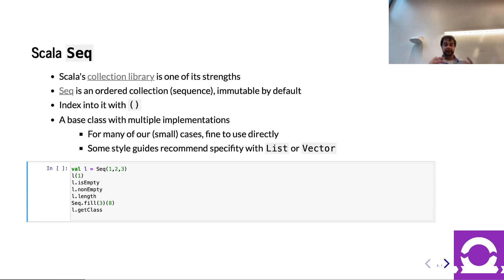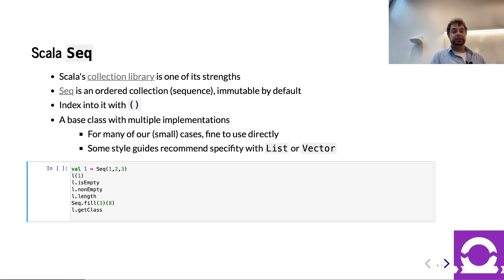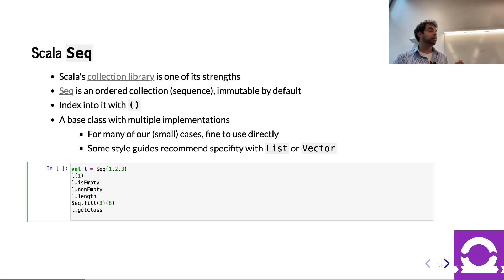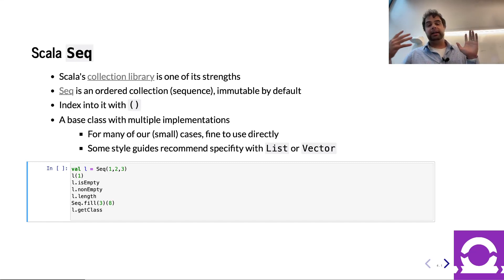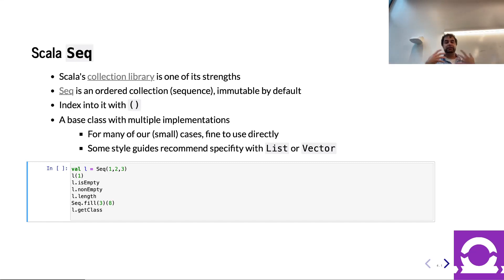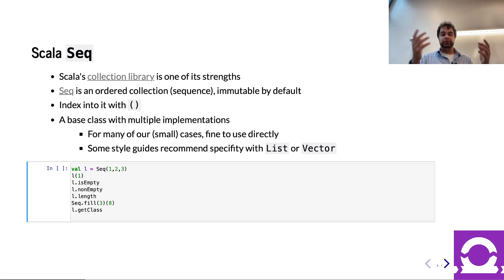First off, the default collection in Scala is something called a Seq — short for sequence. It's not only a collection of things, but sequence implies there's some sort of ordering. So you have n things, and each of those things is associated with a unique index. You can index into a Seq with parentheses.